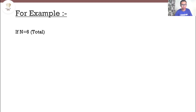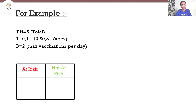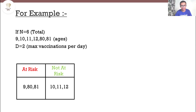For example, if N equals 6 and D equals 2 — meaning a maximum of 2 vaccinations can be done per day — we first categorize the 6 people. Under the at-risk category we have ages 9, 80, and 81, since the condition requires age ≤ 9 or age ≥ 80. Under the not-at-risk category we have ages 10, 11, and 12.